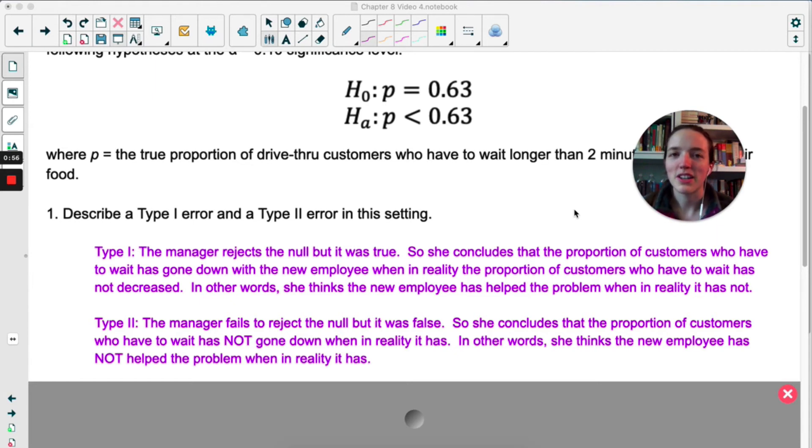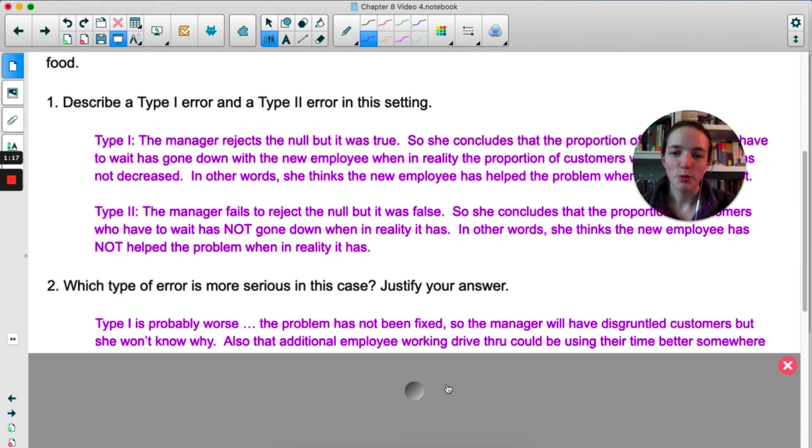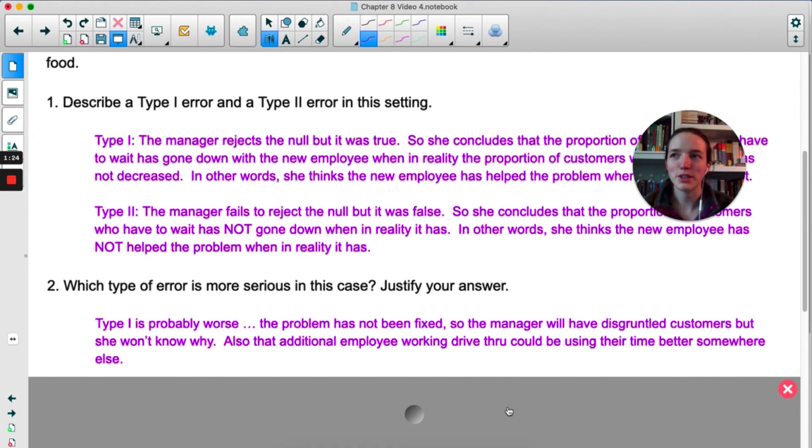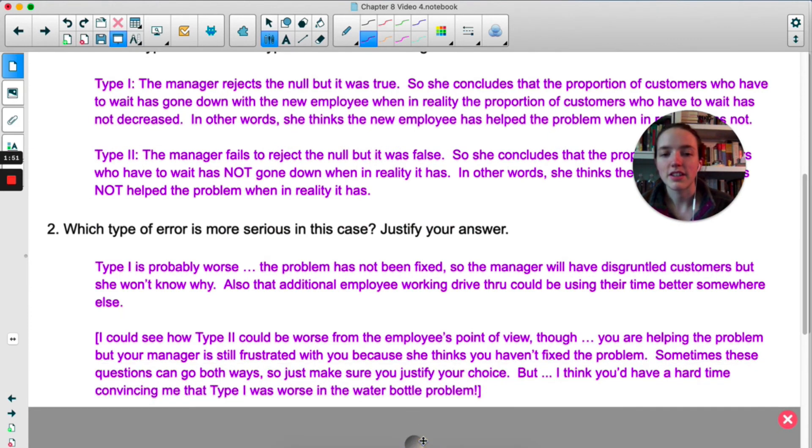I don't know what it is about explaining Type 1 and Type 2 error out loud but it's surprisingly hard to get it straight when you're just speaking. I highly recommend that you write down each part like, see how I've written she rejects the null but it was true, so this means, I'm writing out each step, I make fewer mistakes when I do that. Now which is more serious? I would say Type 1 is probably worse because the problem hasn't been fixed but she thinks that it's been fixed. So you're still going to have angry customers that are waiting for a long time but the manager won't realize it so she's not going to keep trying to fix the problem because she thinks the problem doesn't exist anymore. Also that additional employee working the drive-through could be using their time better somewhere else where they actually could be making a difference. Now I always have students argue that Type 2 could be worse from the employee's point of view. Like you're fixing the problem, you're making things better, but your manager doesn't realize that it's working. I see how that could be frustrating to be fixing the problem but your manager is still mad at you for not fixing the problem. So sometimes these questions can go both ways, the important part is that you can back up your claim.